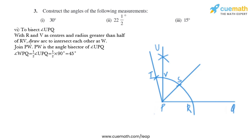We take this intersection point as V. The next step is to bisect angle UPQ: with R and V as centers and radius greater than half of RV, draw arcs intersecting each other at W. Join PW — PW is the angle bisector of angle UPQ — so angle WPQ equals half of 90 degrees, which is 45 degrees.